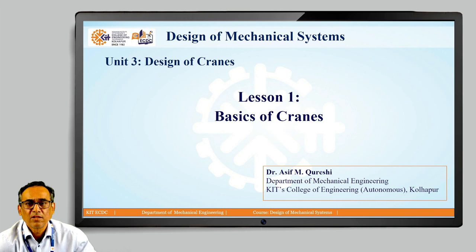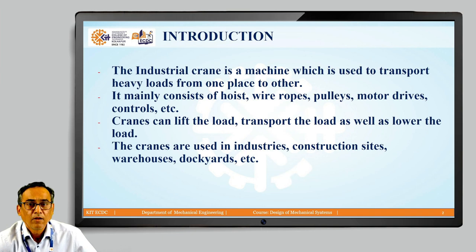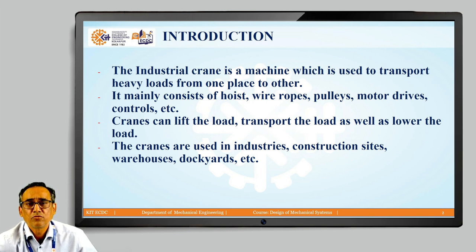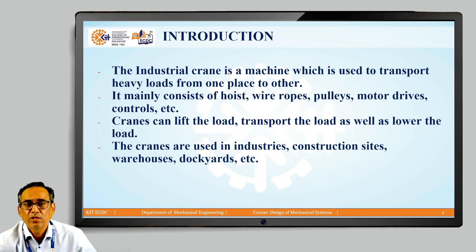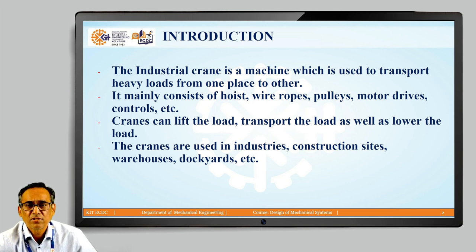First we will discuss the basics of cranes. The crane is a machine which is used to transport heavy loads from one place to another place. It mainly consists of hoist, wire ropes, pulleys, motor drives, controls, etc. Whenever we are designing the crane, we have to consider all these elements, and all these elements together are going to make a crane as one mechanical system. The crane can lift the load, transport the load, as well as lower the load. Cranes are used in industries, construction sites, warehouses, dockyards, etc.